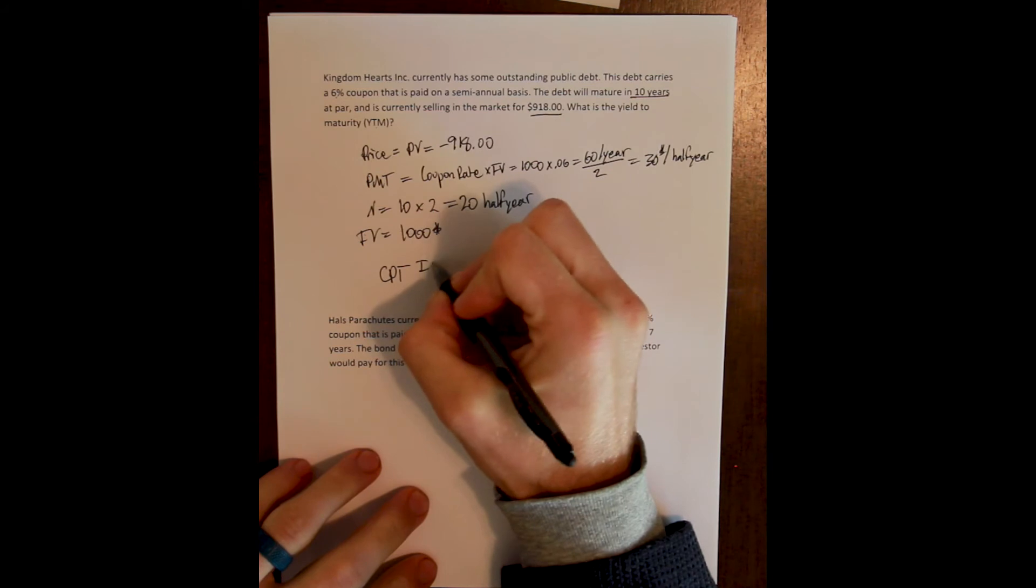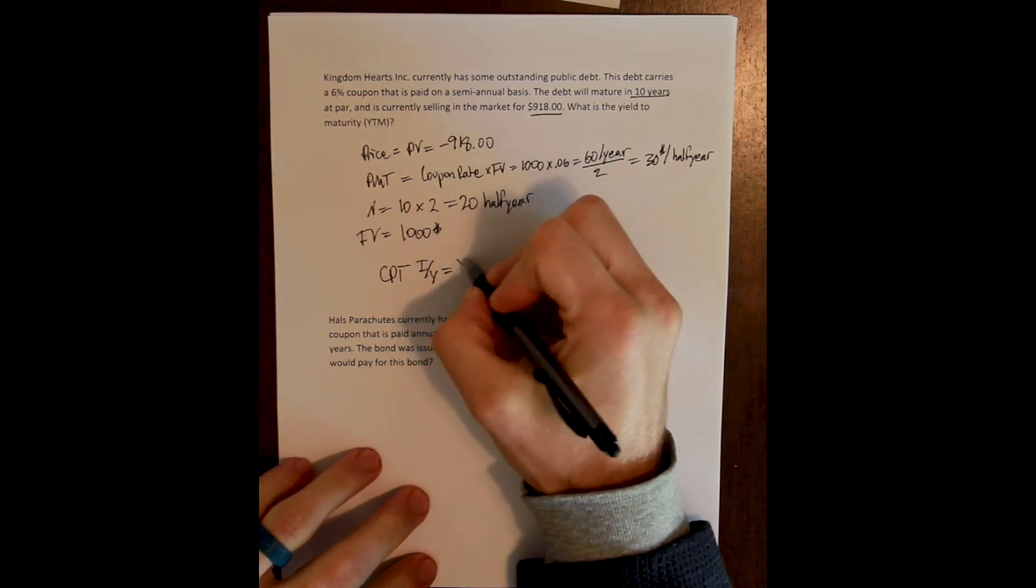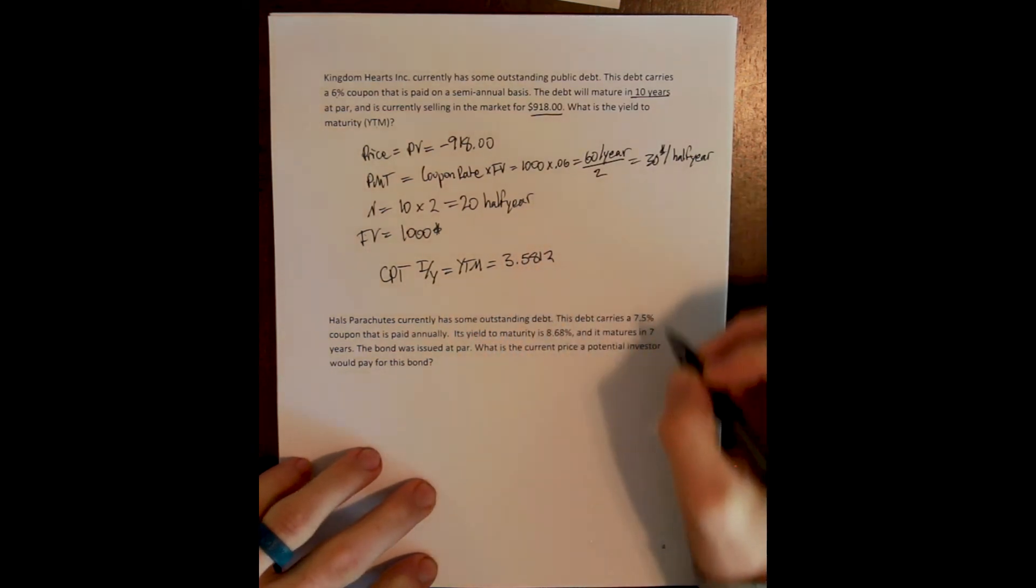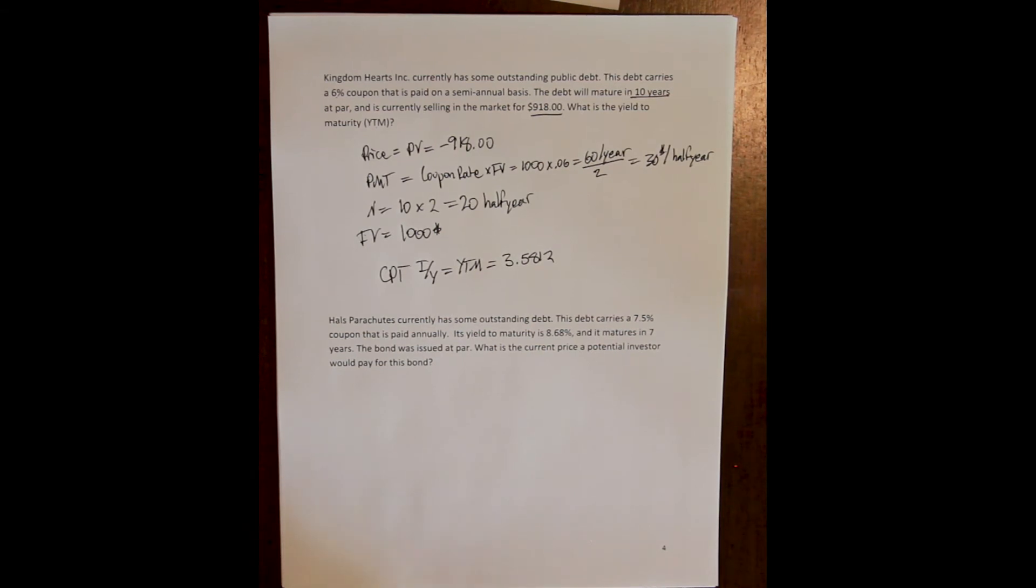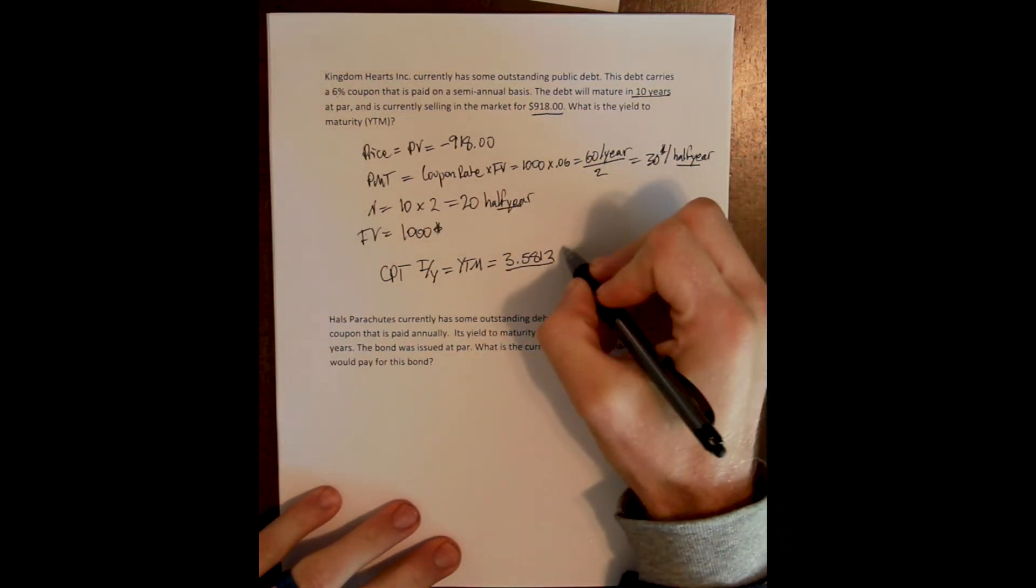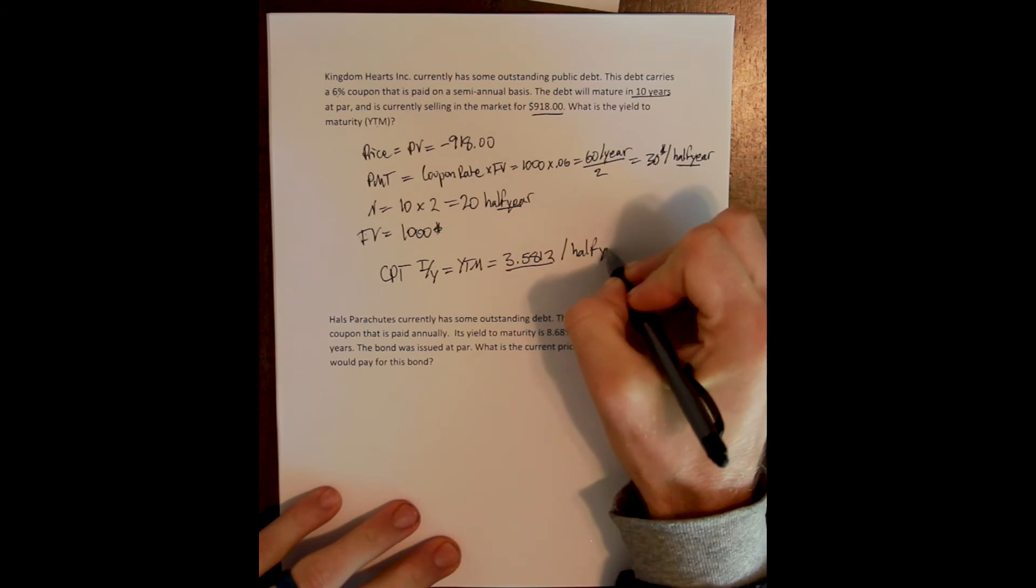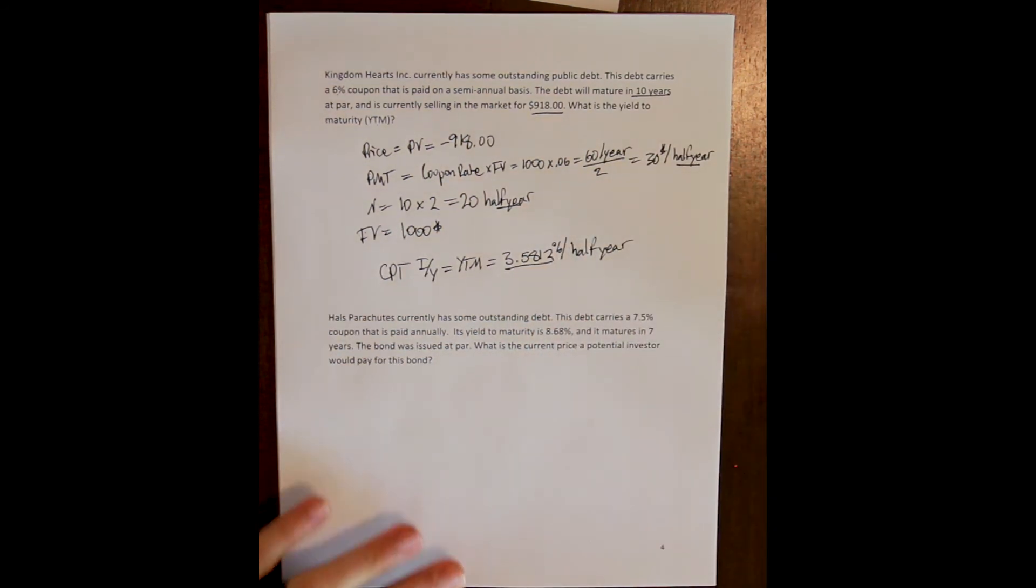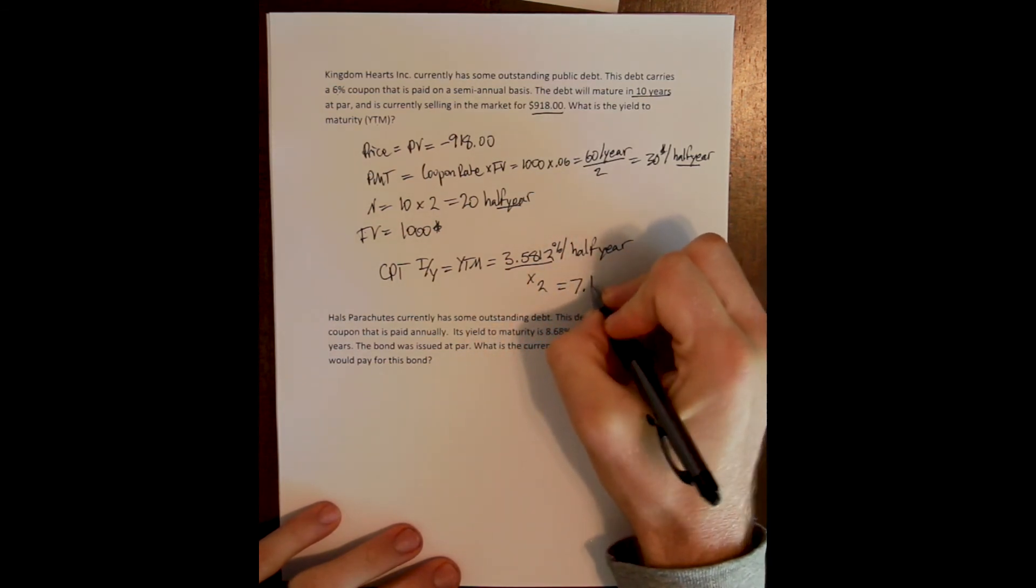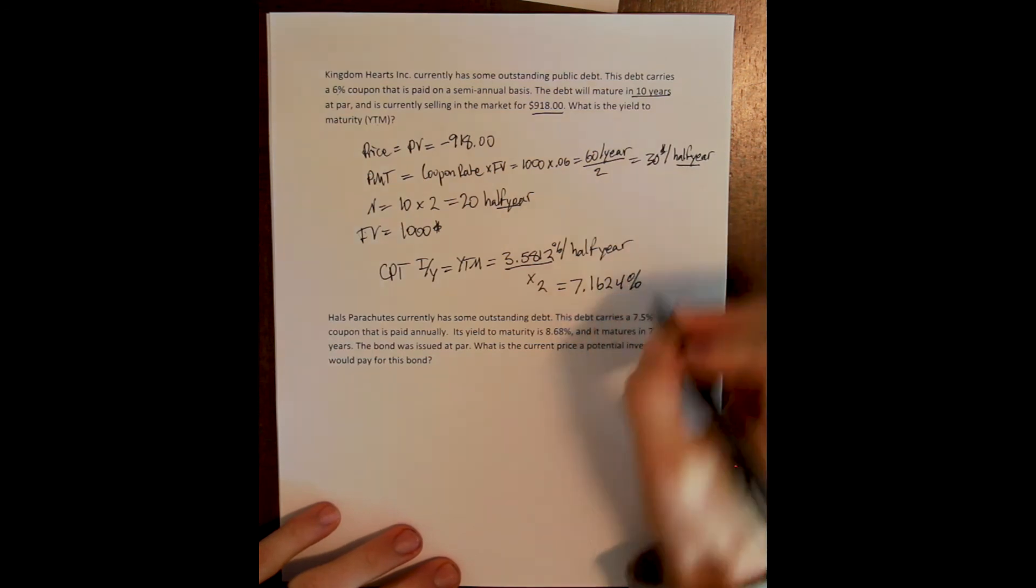And we compute our I/Y to get our yield to maturity. And we get 3.5812. But what we have to remember, and again, this is the easiest point of confusion in these kinds of problems, is that the period of our output will agree with the periods of our input, which means this is a semi-annual rate. So this is 3.5812% per half year. But we always have to report our rates as an annual rate. So we multiply by 2 to get 7.1624% per year.